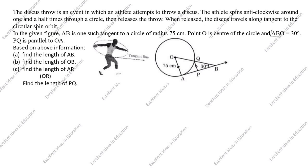When released, the discus travels along a tangent to the circular spin orbit. In the given figure, AB is one such tangent to a circle of radius 75 centimeters. Point O is the center of the circle, and angle ABO is equal to 30 degrees. PQ is parallel to OA. Based on the above information, find the length of AB, length of OB, length of AP, and length of PQ.